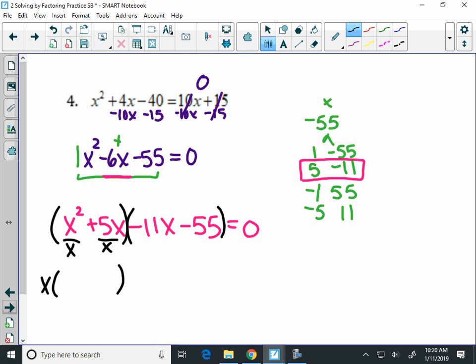So I'm going to pull an X out in front. And inside there, I'll have X plus 5. Now, in the third term here, it's negative. So I'm going to have a negative GCF, and it looks like I can pull out a negative 11. When I do that, I'm left with X plus 5.